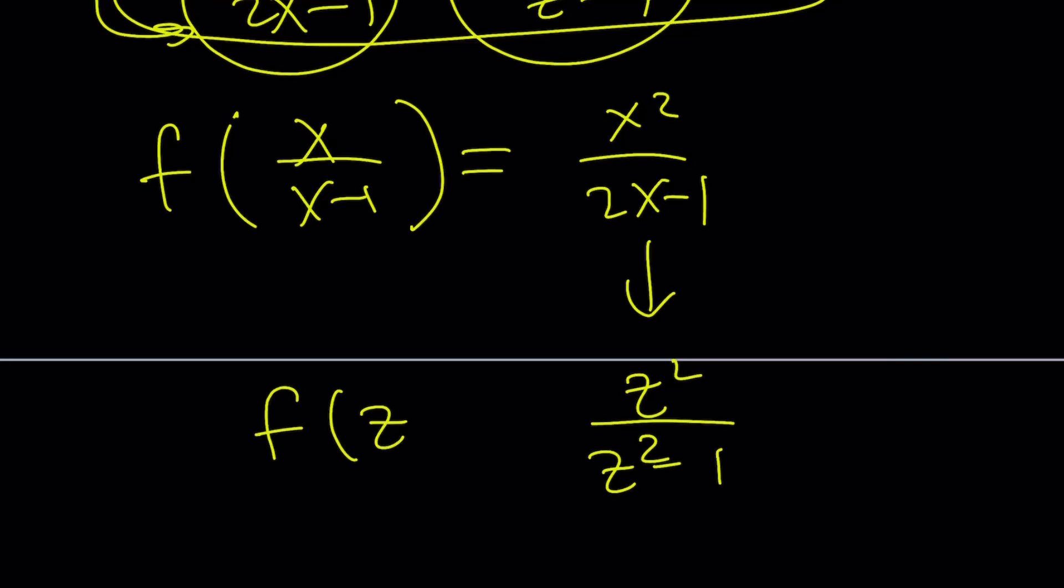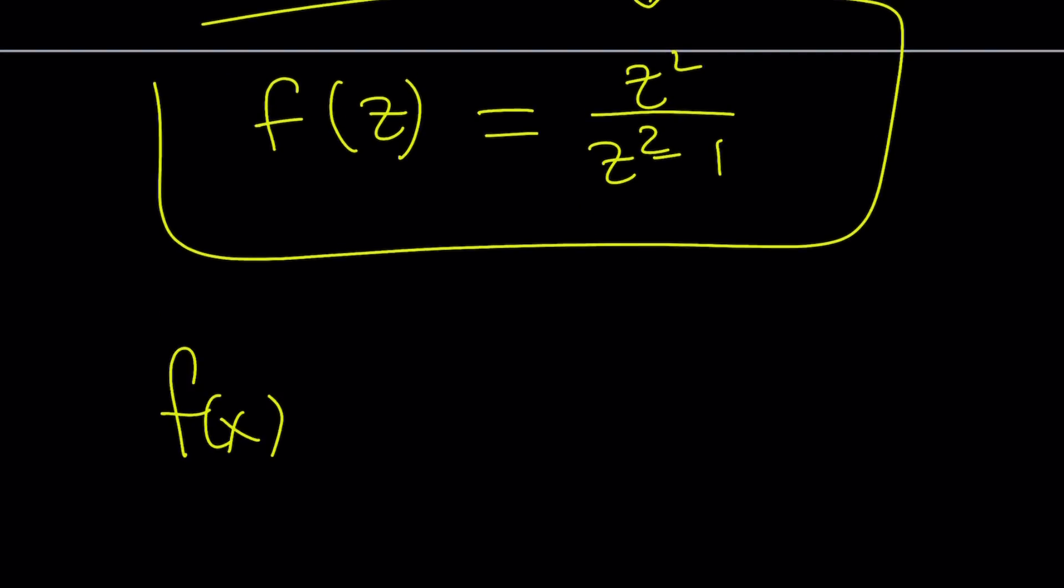And the left-hand side is f of z. So, I got f of z which means I can turn this into f of x. And that can be written as x squared over x squared minus 1 as before.